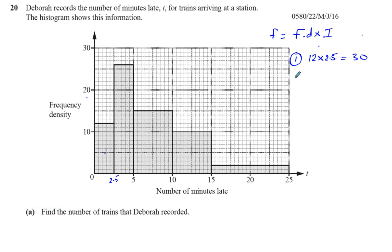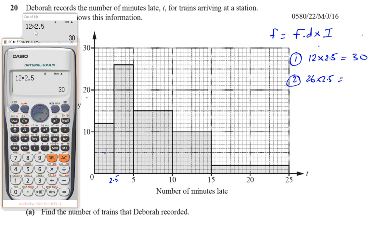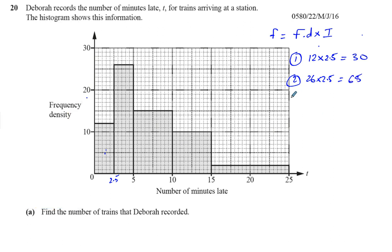26 times 2.5 gives you 65, so there are 65 trains in that bar. The third bar: its height is 15 and its width is 5, from 5 to 10. So 15 times 5 is 75.